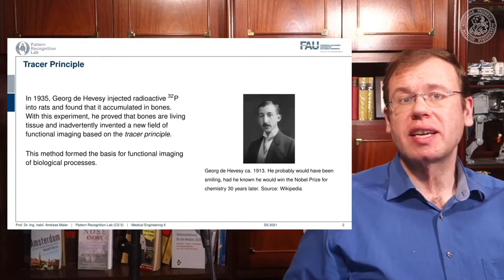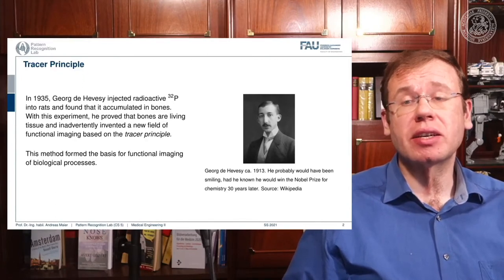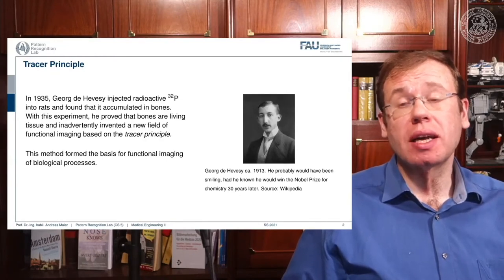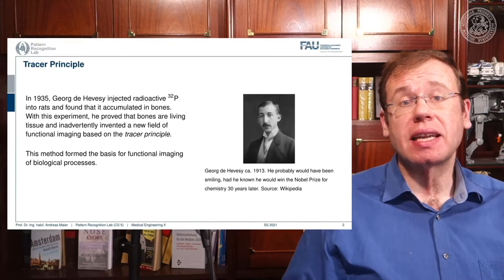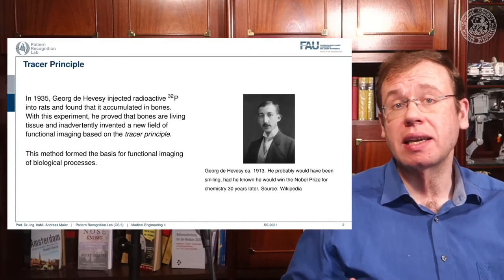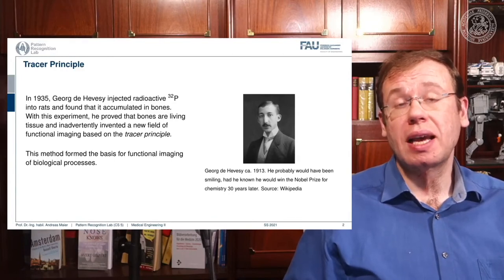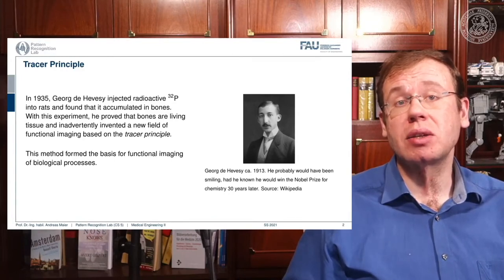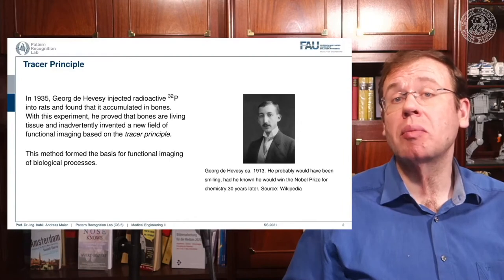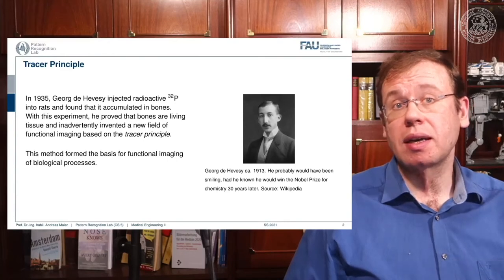George de Hevesy injected radioactive phosphorus into rats and found that it accumulated in the bones. With this experiment, he was the first to show that bones are actually living, and that they can accumulate something injected into an animal. This gave rise essentially to the tracer principle: you take a radioactive isotope, put it into the metabolism, and then measure its distribution. This is the core idea of nuclear imaging.